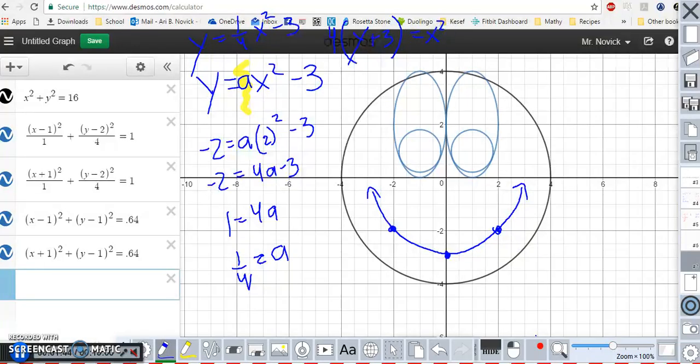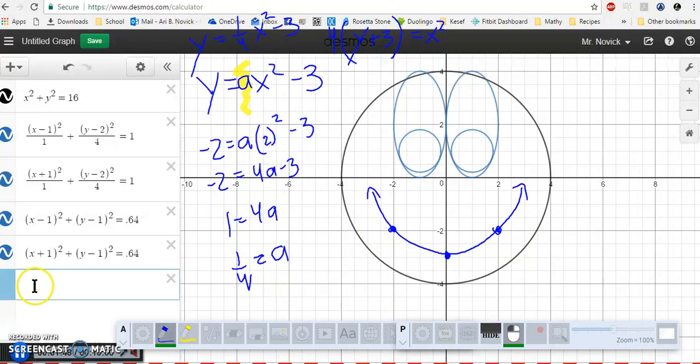So if I want to graph this conic, I'm going to go over here and type in 4 times (y plus 3) equals x squared.